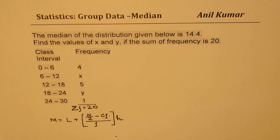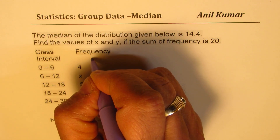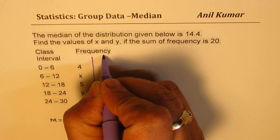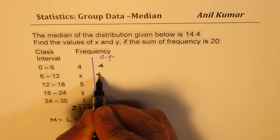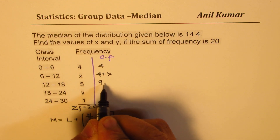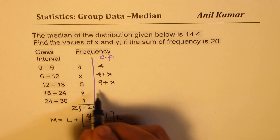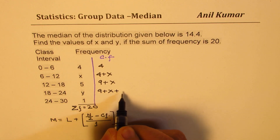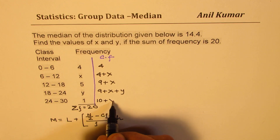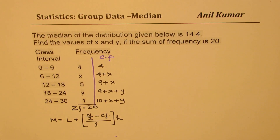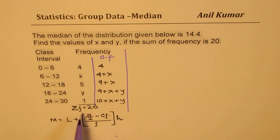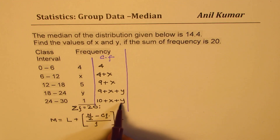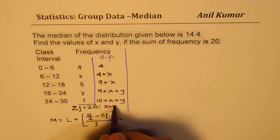Now in this particular case, let us first find cumulative frequency. Let me make an additional column here — I'll just squeeze it in — cumulative frequency. We get 4, then when you add X it becomes 4 plus X, add 5 gives 9 plus X, add Y gives 9 plus X plus Y, and when you add 1 it becomes 10 plus X plus Y. So when the total is 20, that tells us that 10 plus X plus Y equals 20, meaning X plus Y equals 10.